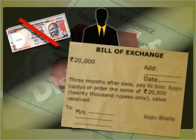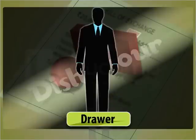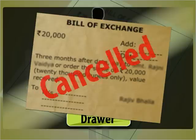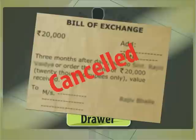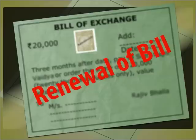When the drawee finds it unable to make payment of the bill on the due date, he may request the drawer of the bill to extend the date of payment. If the drawer accepts his request, then the original bill has to be cancelled and a new bill for the extended period has to be drawn. This is called renewal of the bill.